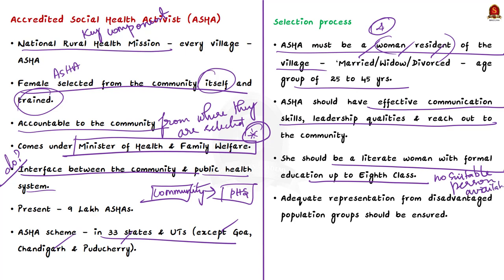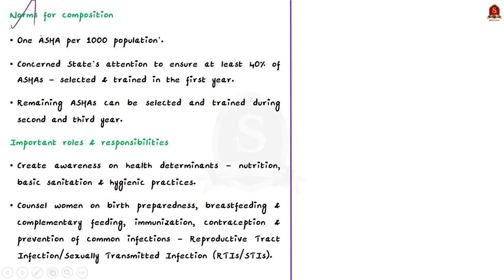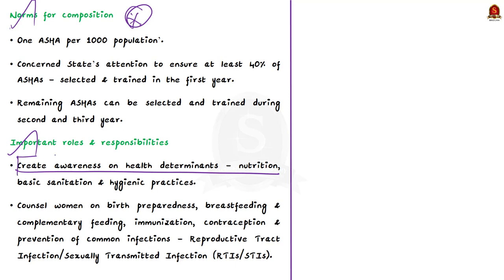Lastly, adequate representation from disadvantaged population groups should be ensured. Now the key roles and responsibilities of ASHA workers: the first role is to create awareness on health determinants such as nutrition, basic sanitation, and hygienic practices. The second role is to counsel women on birth preparedness, breastfeeding, and complementary feeding.